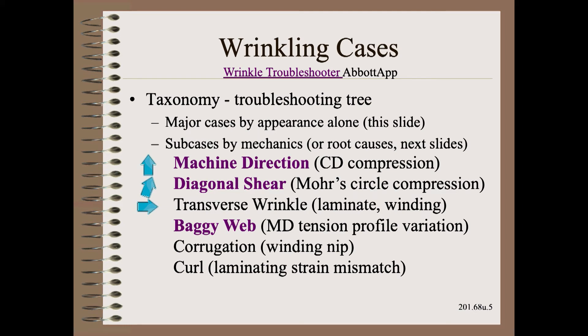As we learned in our Web 101 class, we absolutely must get the wrinkle diagnosis correct, because a wrinkle is not a wrinkle is not a wrinkle. Wrinkling, or lack of flatness, is first broken up into six major cases, as shown in this slide, and then into sub-cases or root causes as seen in the next slides. Anyone can determine a major class at a glance by appearance alone. If you need more guidance, you can access the free and easy Wrinkle Troubleshooter by Abbott App.